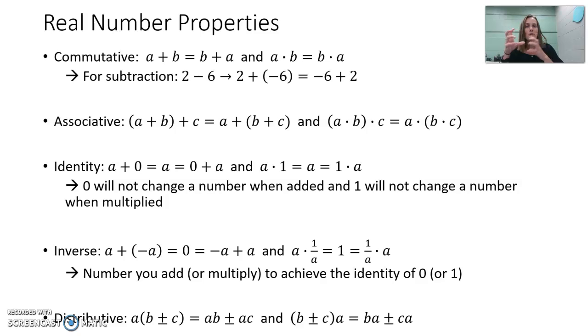Associative properties, moving the parentheses around. Identity property is really what number can you add to any number and it doesn't change it, that's zero. What number can you multiply to any number and it doesn't change it, and that is one.